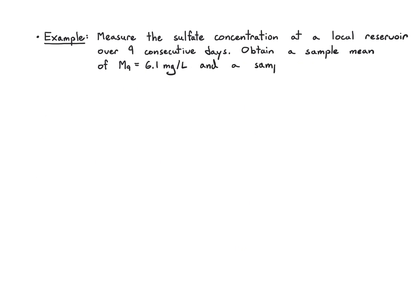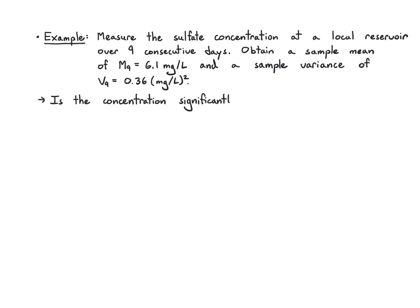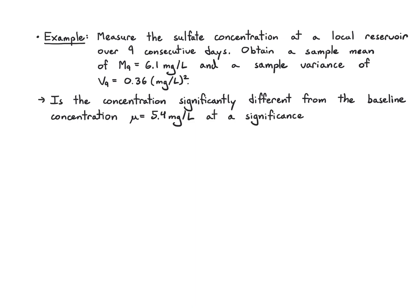Let's stay in the same example, but now we'll say we don't know the variance, and we measure it to be 0.36 milligrams per liter squared. We're going to ask the same question but change the significance level just to try different levels: is the concentration significantly different from the baseline of 5.4 at a level of 0.05? Since we have one data set with an unknown variance, we're going to use a one-sample t-test.